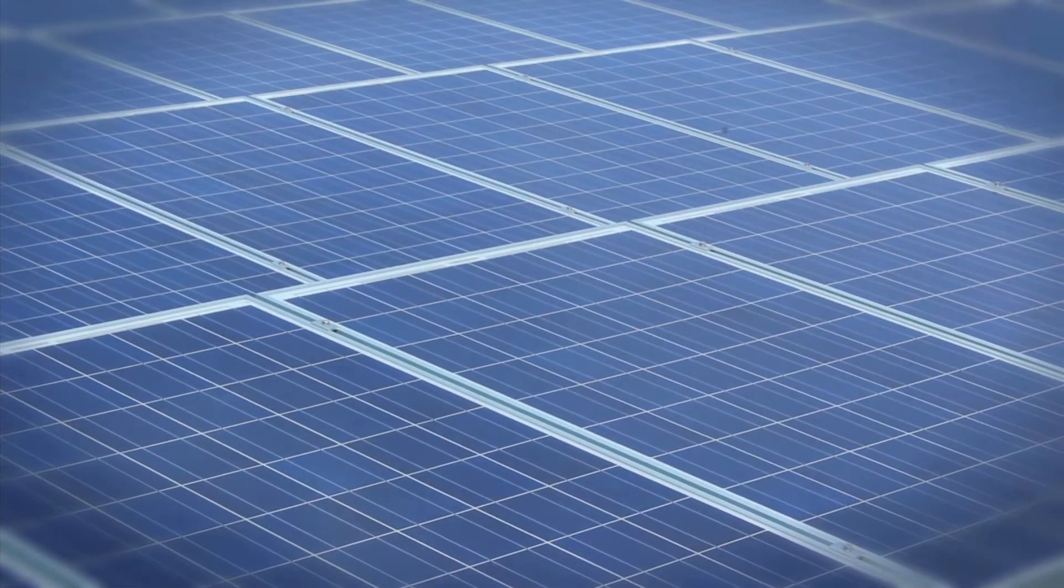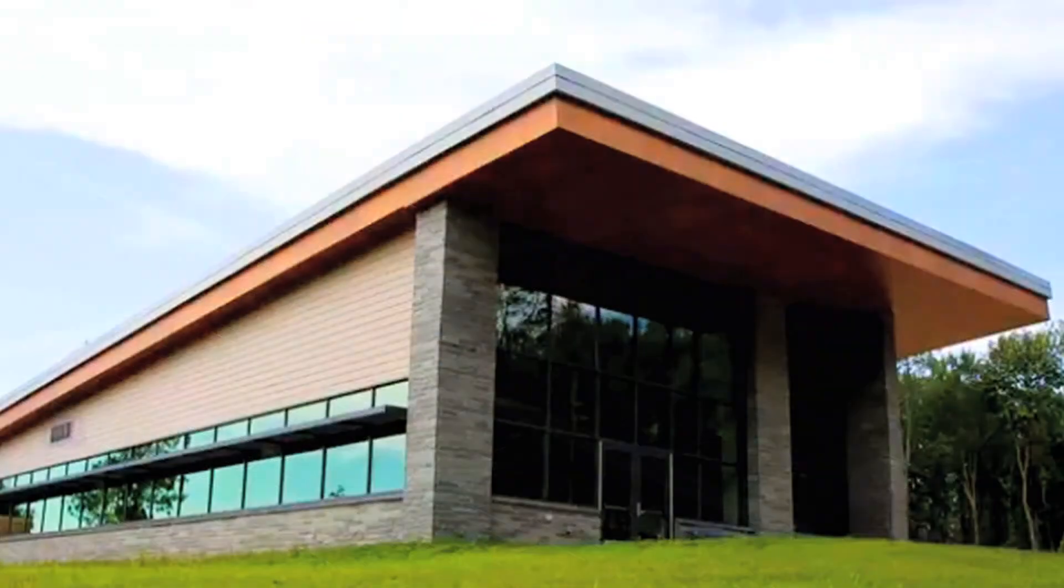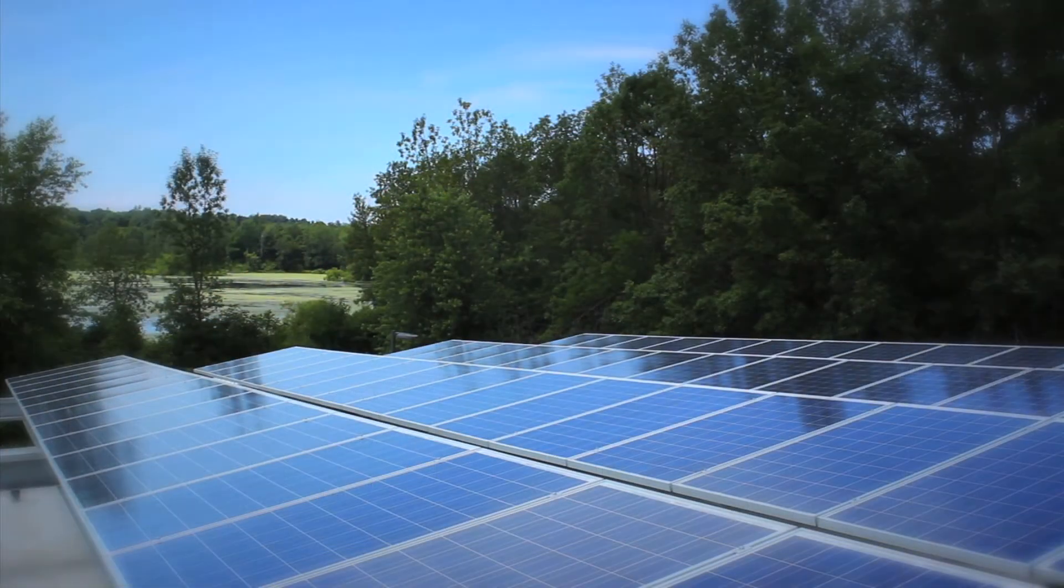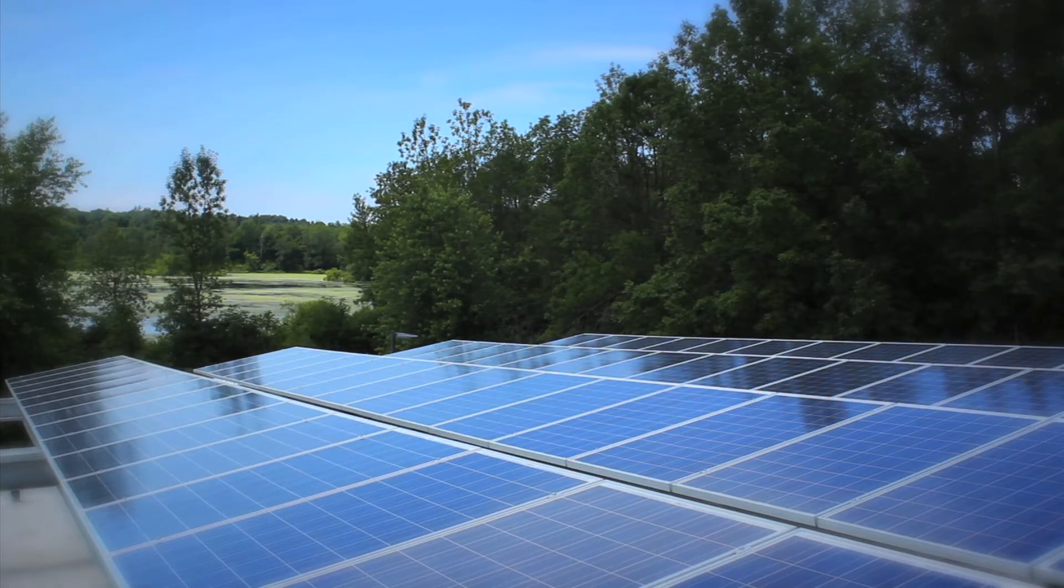One of the major design features of the new main building at SUNY Oswego's Rice Creek Field Station is the bank of photovoltaic panels mounted on the building's signature sloping roof.